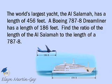The world's largest yacht, the Al Salamah, has a length of 456 feet. A Boeing 787-8 Dreamliner has a length of 186 feet. Find the ratio of the length of the Al Salamah to the length of a 787-8.